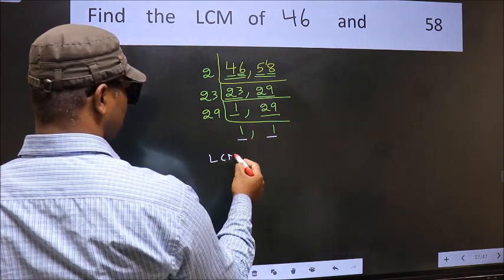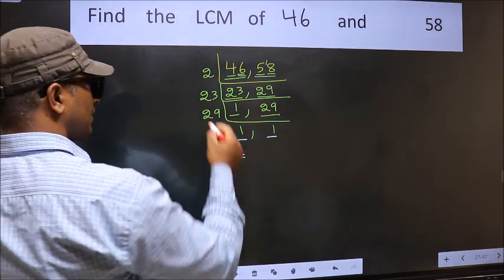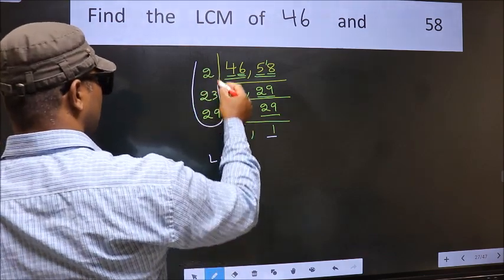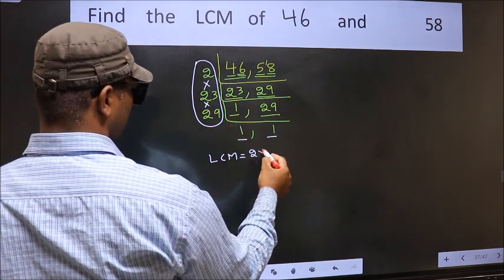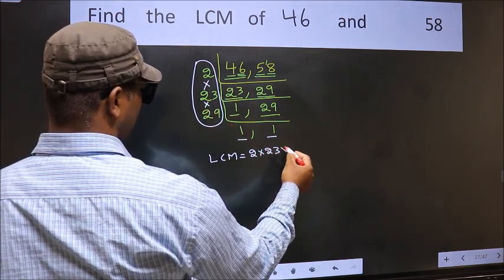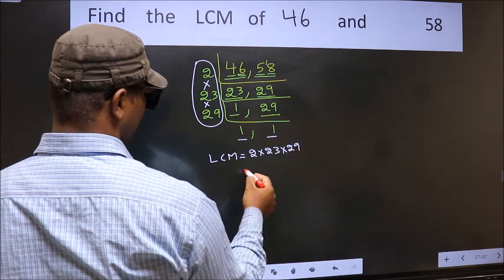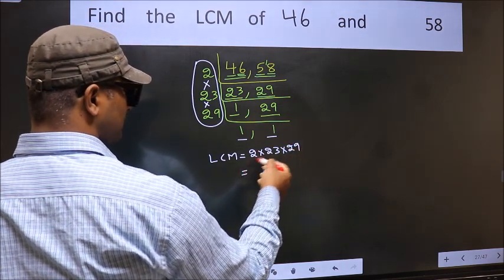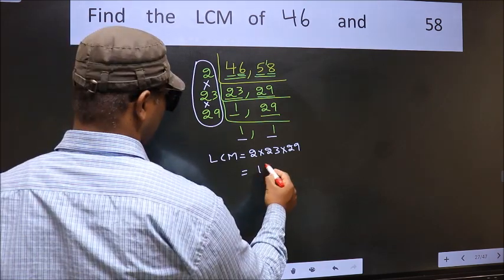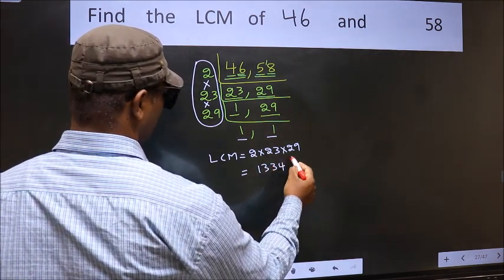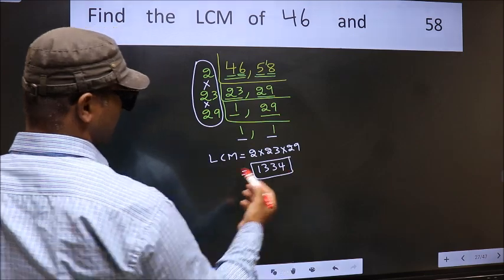So our LCM is the product of these numbers. That is 2 into 23 into 29. When we multiply these numbers we get 1334 is our LCM.